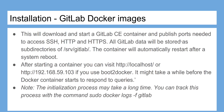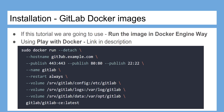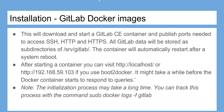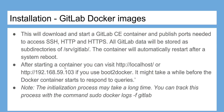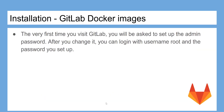This will download and start a GitLab CE container and publish ports needed to access SSH, HTTP, and HTTPS. All GitLab data will be stored as subdirectories of /srv/gitlab. The container will automatically restart after a system reboot. After starting the container, you can visit http://localhost/ or http://192.168.59.103 if you use Boot2Docker. It might take a while before the Docker container starts to respond to queries.